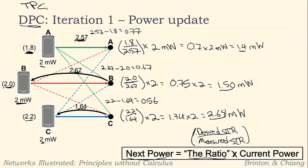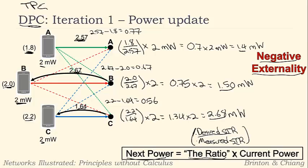Why do we have to perform such an update? It seems complicated. It turns out that from a different standpoint, we're actually aligning each cell phone's incentives. We're forcing each of them to internalize the negative externality they impose on the network by being there in the first place — the negative externality being interference. Because A is in the network, it causes interference for B and C. This courtesy procedure makes each transmitter lower its power when its SIR is too high, internalizing the negative effect it imposes on everyone else. Negative externality will be a recurring theme throughout this course.